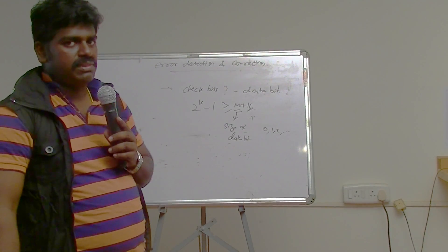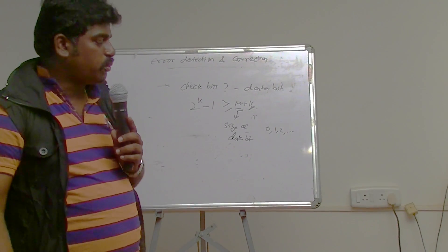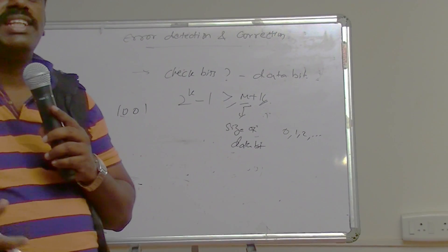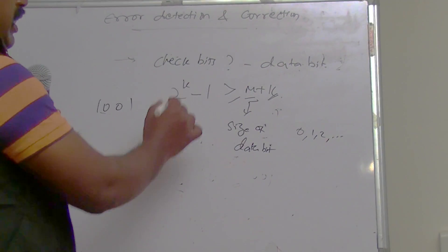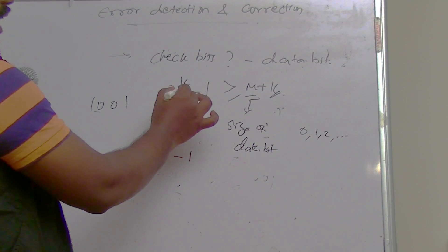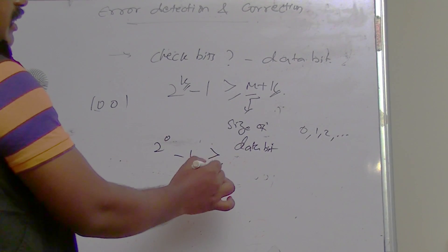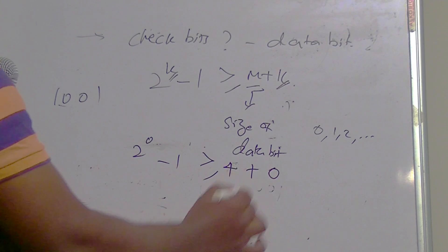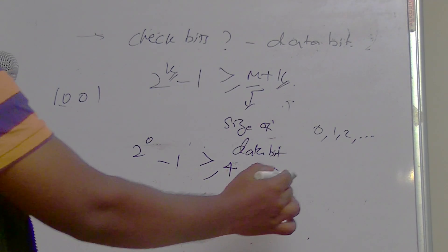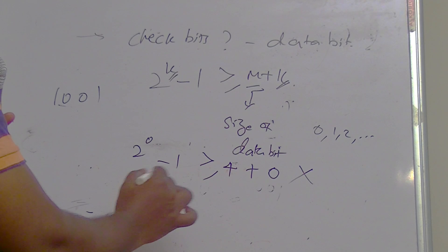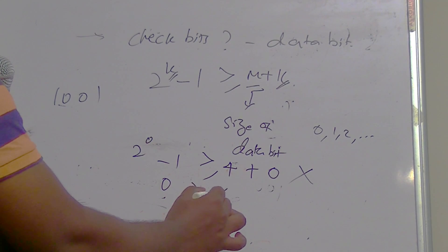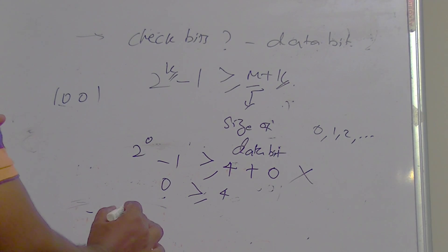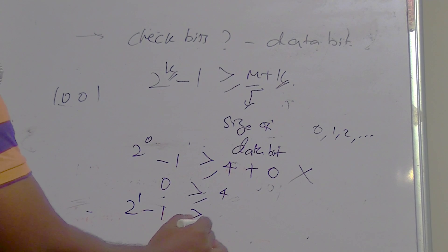For example, if the input data bit is 4 bits, how many check bits are required? Substituting k = 0: 2^0 − 1 = 0, which is not greater than or equal to 4 + 0 = 4, so it is not satisfied. Next, substituting k = 1: 2^1 − 1 = 1, which is not greater than or equal to 4 + 1 = 5, so it is also not satisfied.